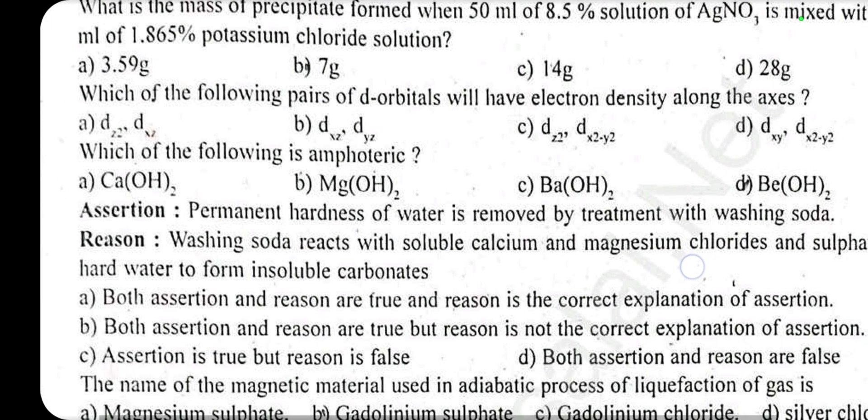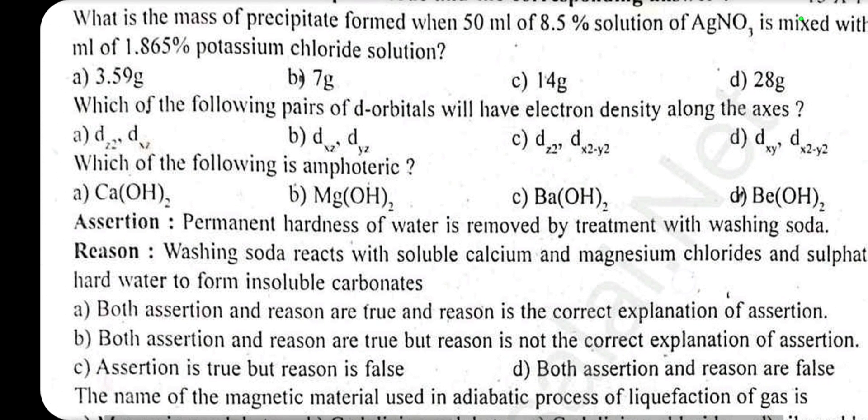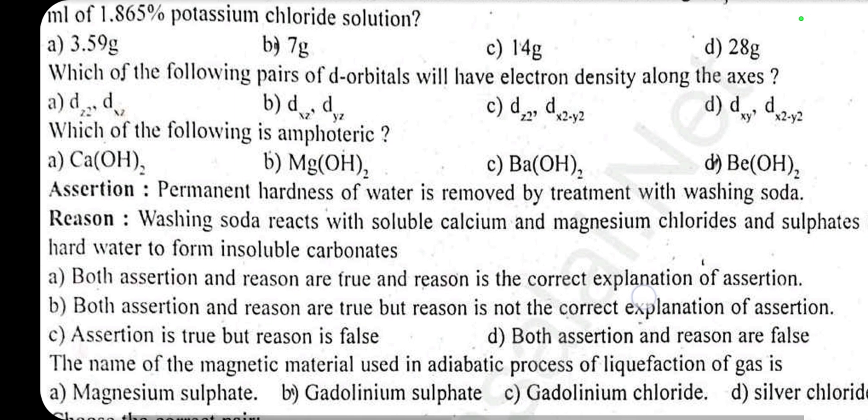Fifth lesson: alkali metals. Which of the following is amphoteric? Answer D: Beryllium hydroxide is amphoteric.